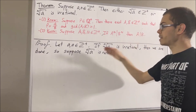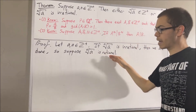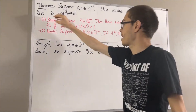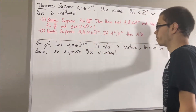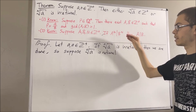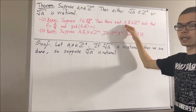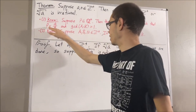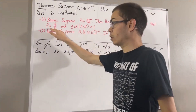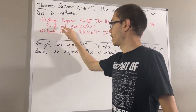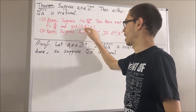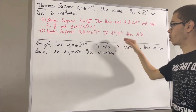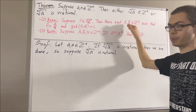Now, since the n-th root of a is rational, and the n-th root of a is positive, we can apply fact number one. So there must exist positive integers P and Q such that the n-th root of a is equal to P over Q, and the greatest common divisor of P and Q is equal to 1.